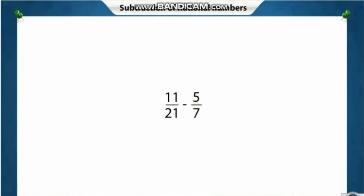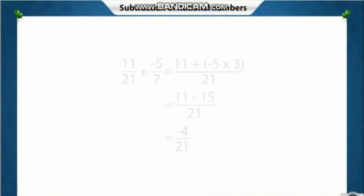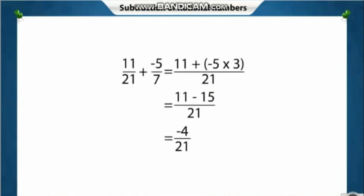The additive inverse of 5 by 7 is minus 5 by 7. So we can add minus 5 by 7 to 11 by 21. Follow the steps to find the difference between the two rational numbers.